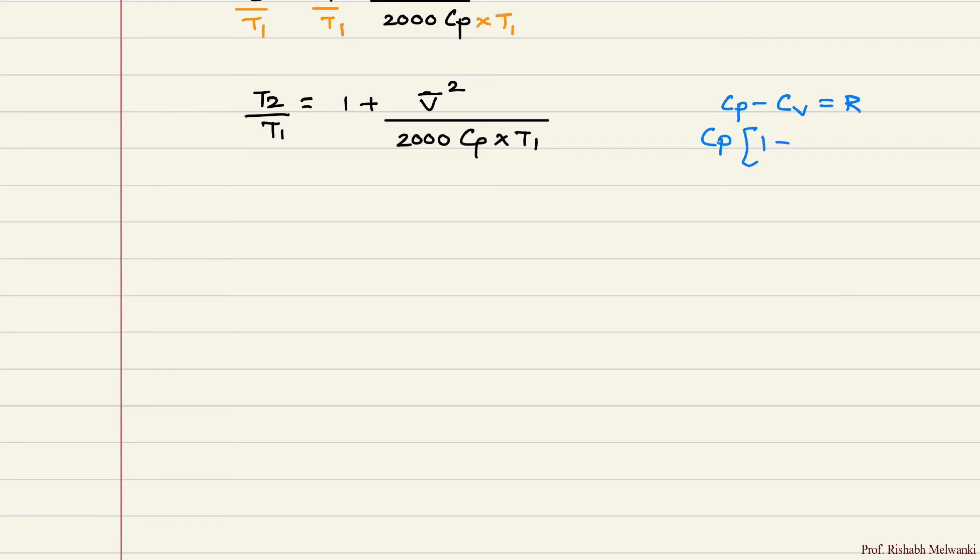Now Cp by Cv is gamma, adiabatic index. So what I can write: Cp in bracket 1 minus 1 by gamma equal to R. So Cp in bracket gamma minus 1 upon gamma is equal to R. So Cp is equal to gamma R upon gamma minus 1.